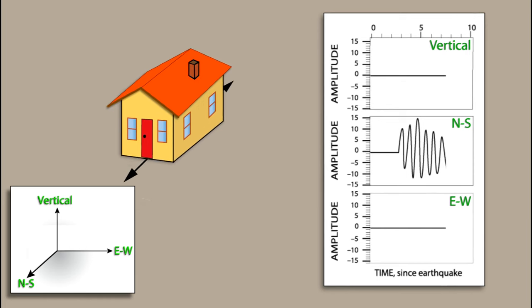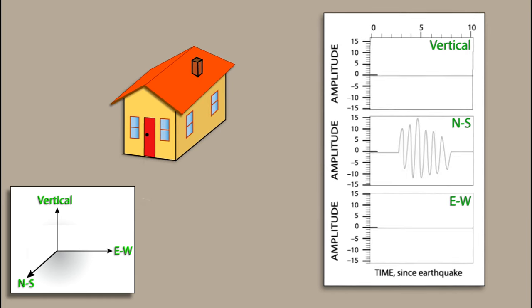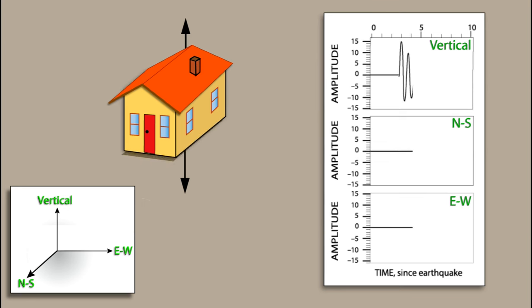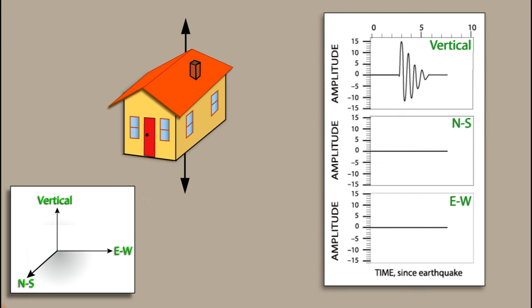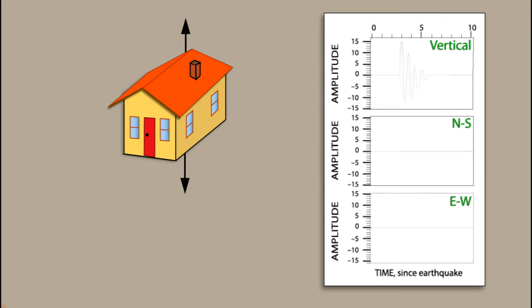When the house shifts north-south, this shows up on the second line. When the house is shaken in an up-down or vertical motion, only the top seismogram records the motion.